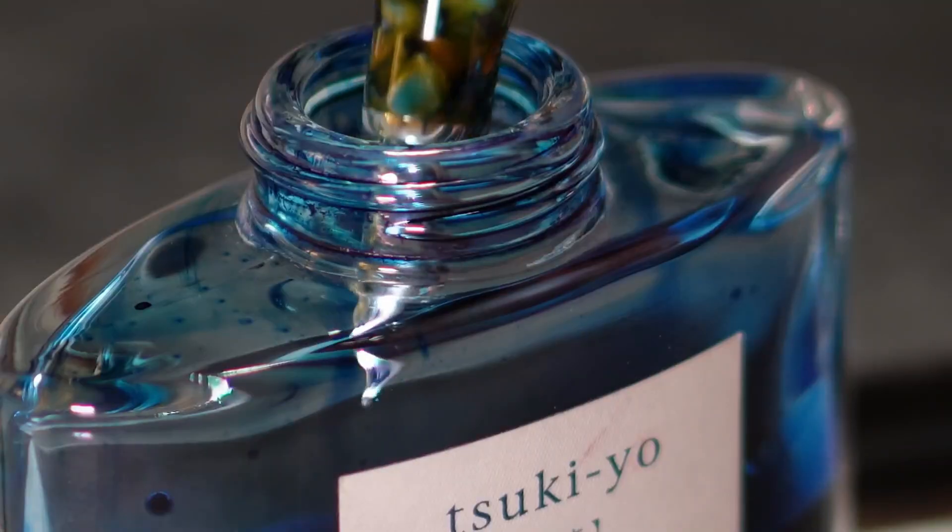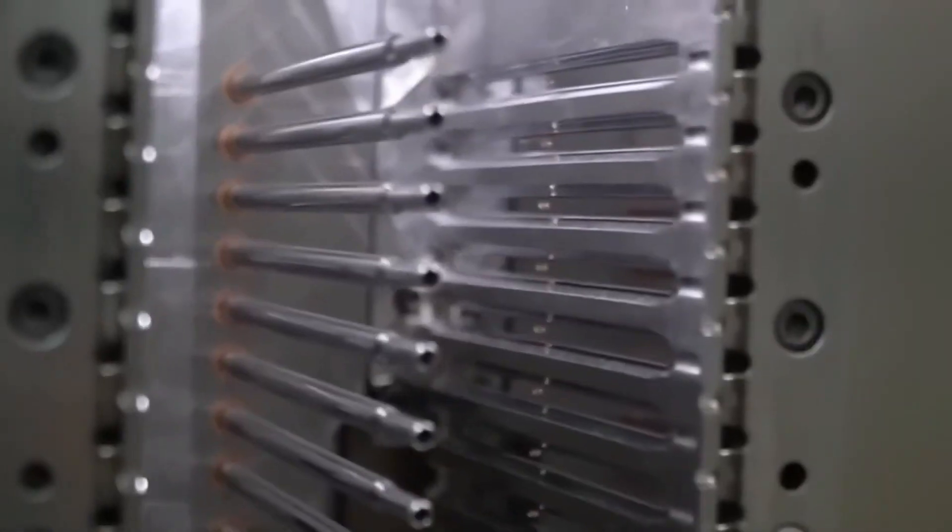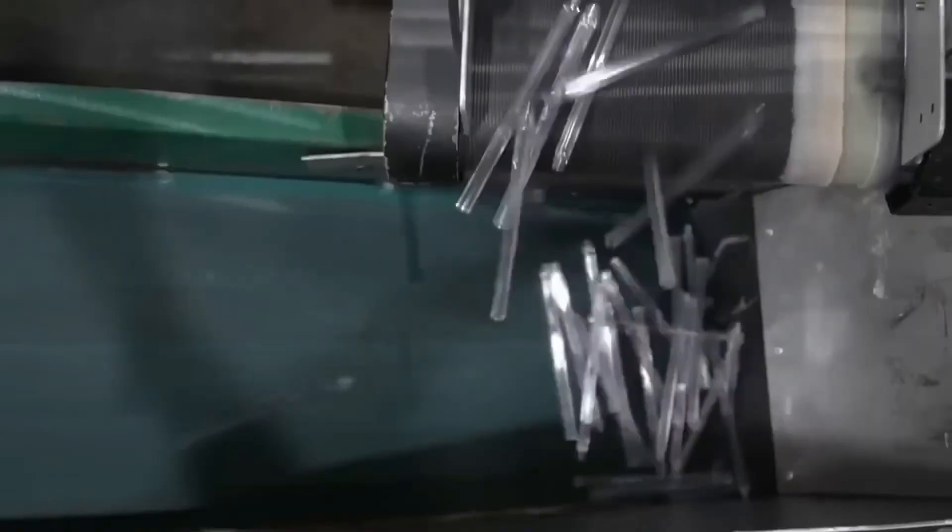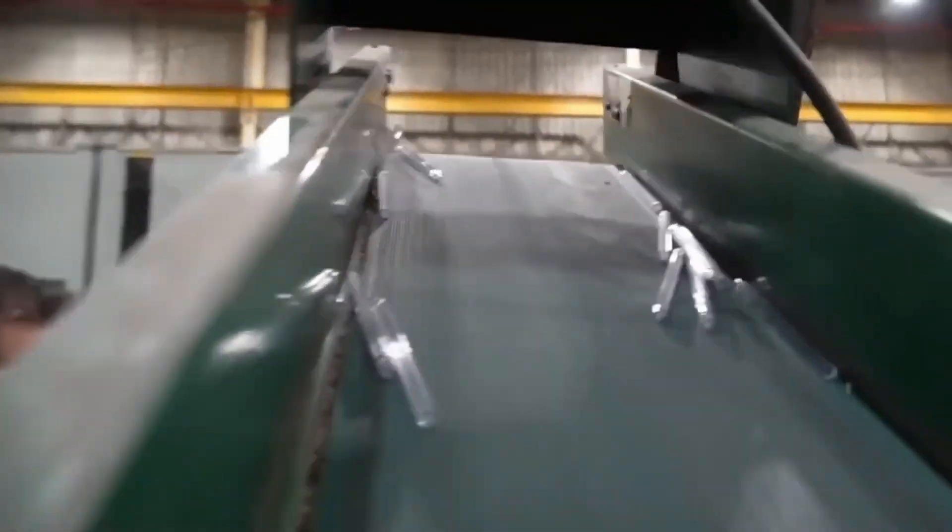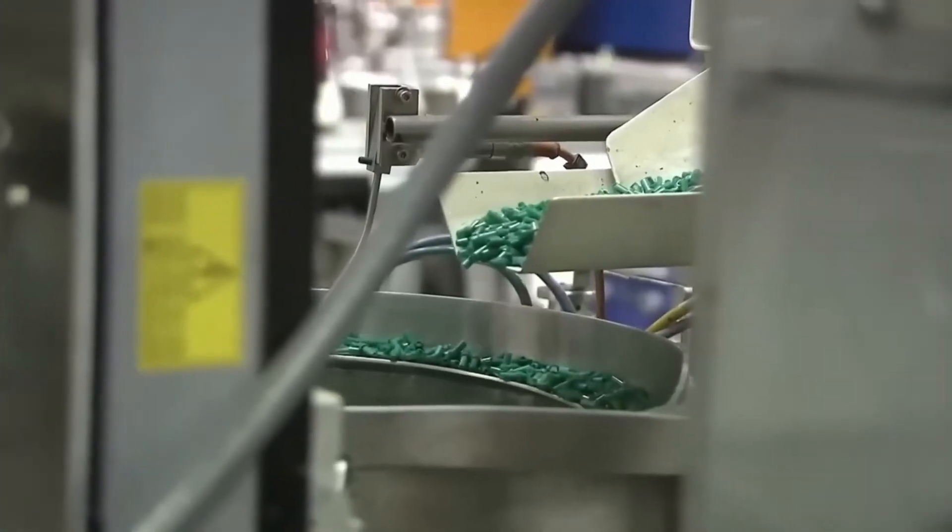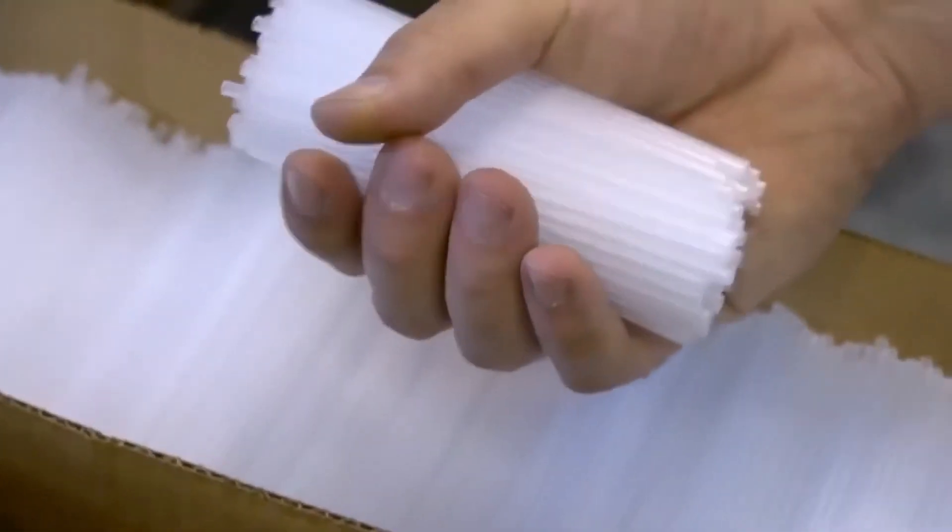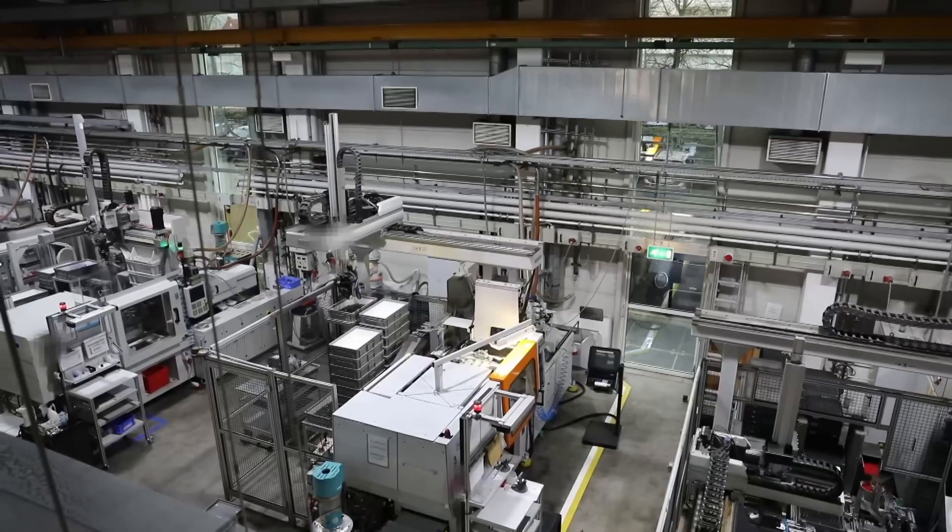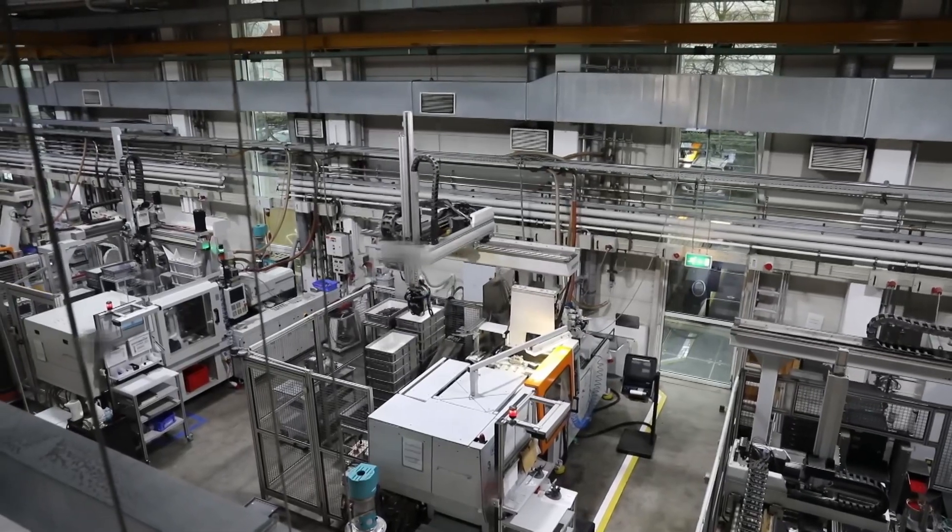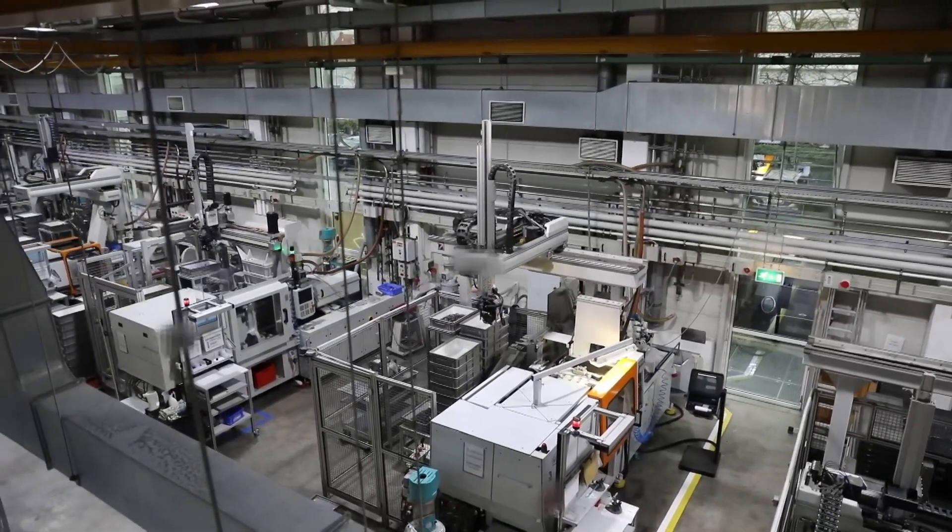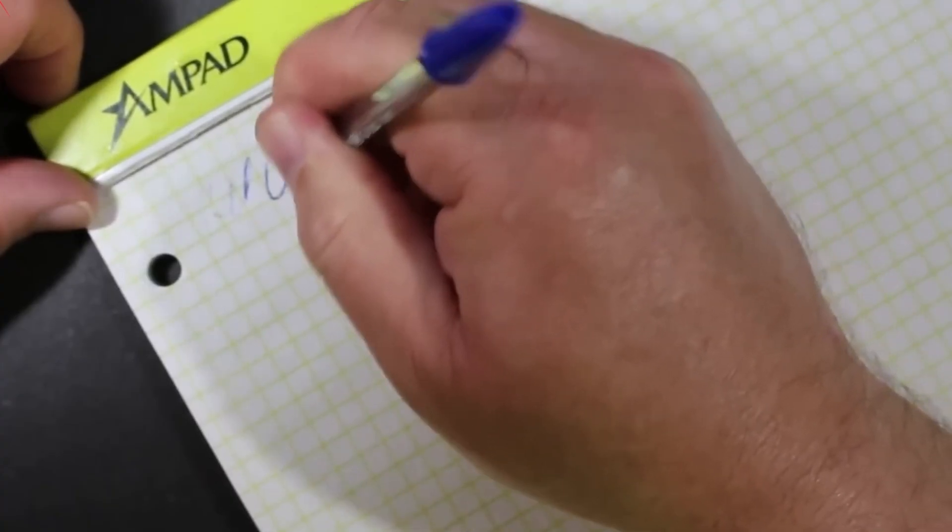For simpler, straight parts like the body of the pen where the ink goes, they use extrusion. This is a bit like squeezing toothpaste out of a tube, but in this case, they push heated plastic through a shape-making tool called a die. This forms long tubes or rods of plastic, which are then chopped up to the right size. By following these steps, you can be sure that every part of the pen fits together perfectly. This means that there will be no leaks and the pen will feel great in your hand.